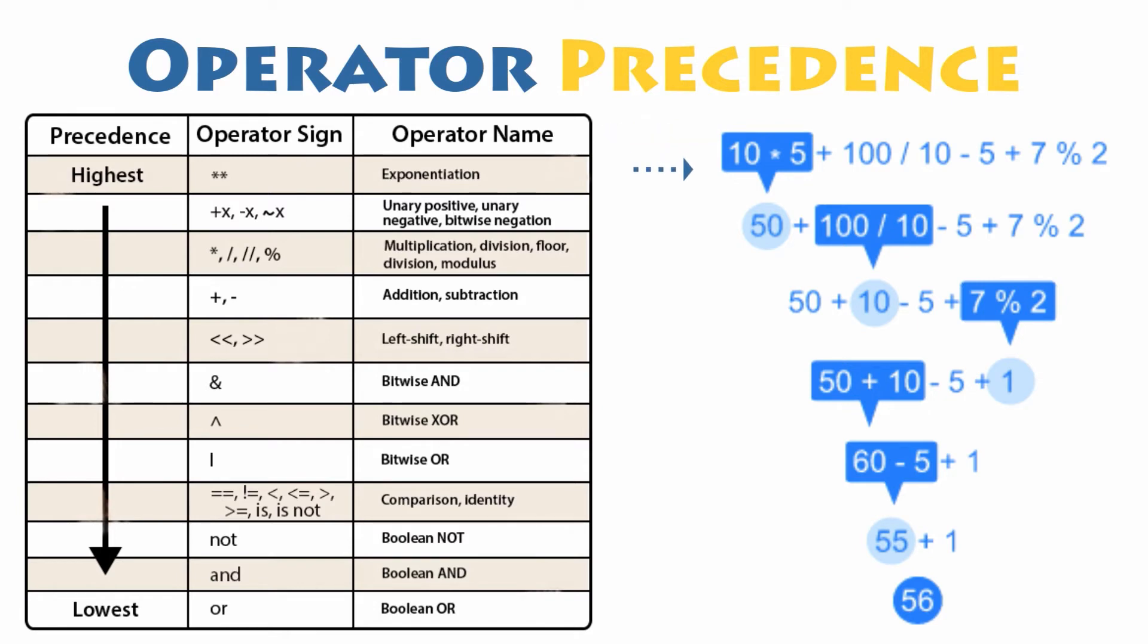Once those results are obtained, operators of the next highest precedence are performed. So it continues until the expression is fully evaluated. And any operators of equal precedence are performed in left to right order.